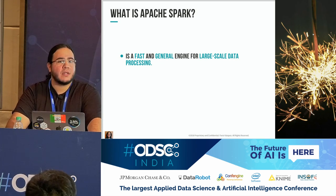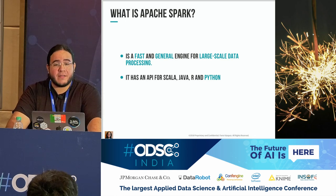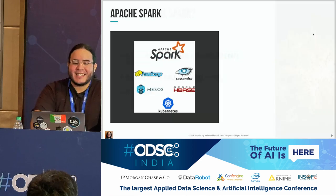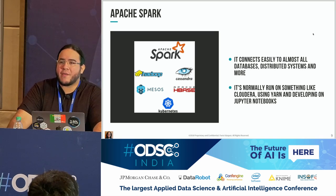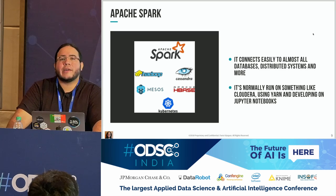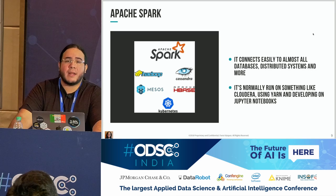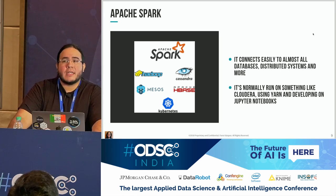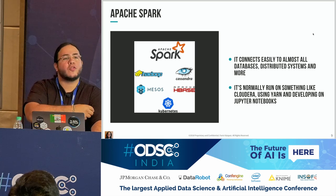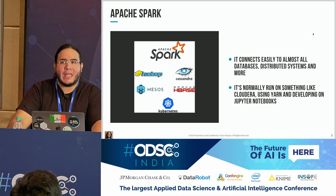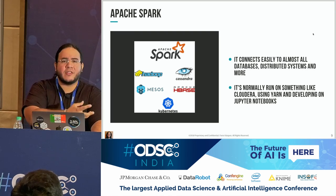It's general because you can do a lot of stuff with it, like SQL distribution, machine learning, or graph analysis. It has an API for Python, Scala, R, and Java. Apache Spark connects very easily with stuff you already have in your company, like SQL Server, MySQL, Postgres, Cassandra, or HBase. And you can distribute your computations in a Mesos cluster, YARN cluster, or Cloudera. They made it very easy for people to adapt this new technology for their companies. Normally, you will run it on a Cloudera server with YARN and interact with it with Jupyter.